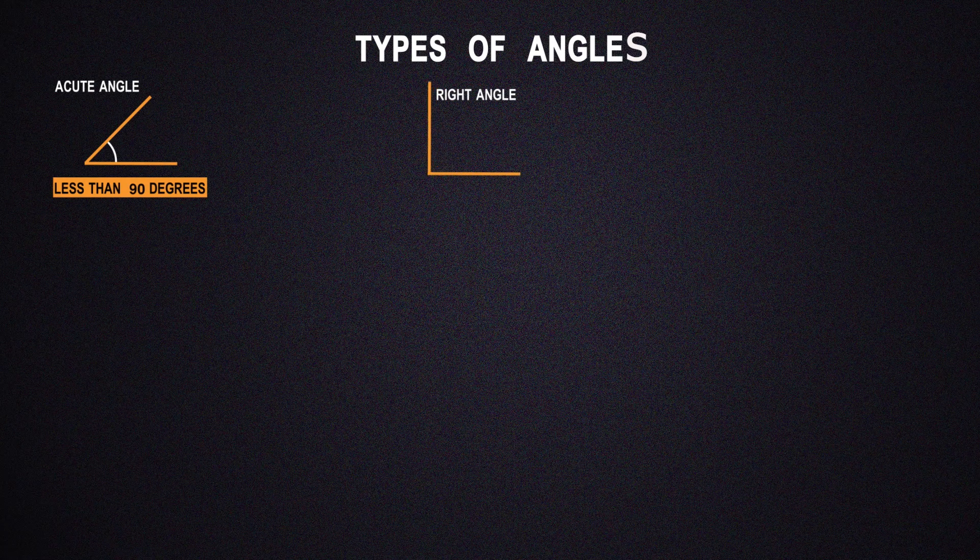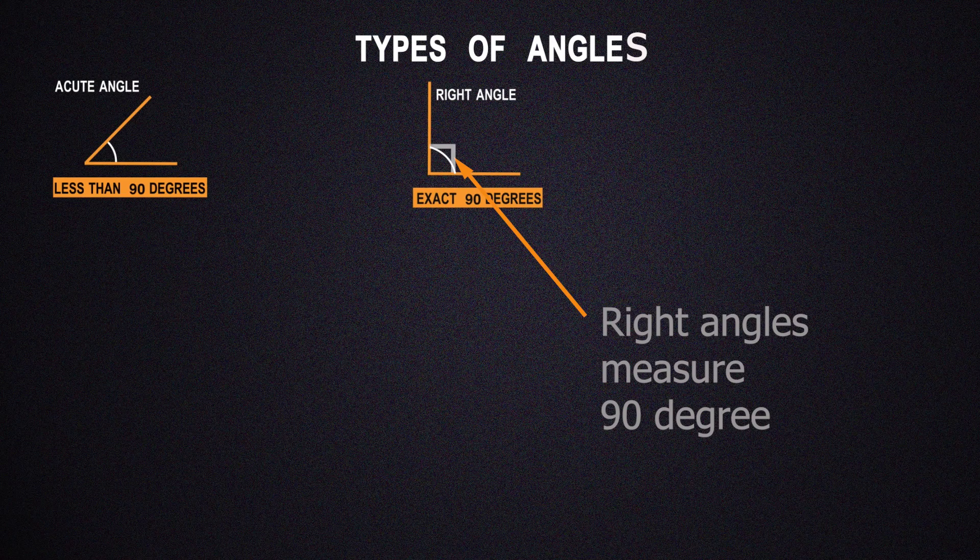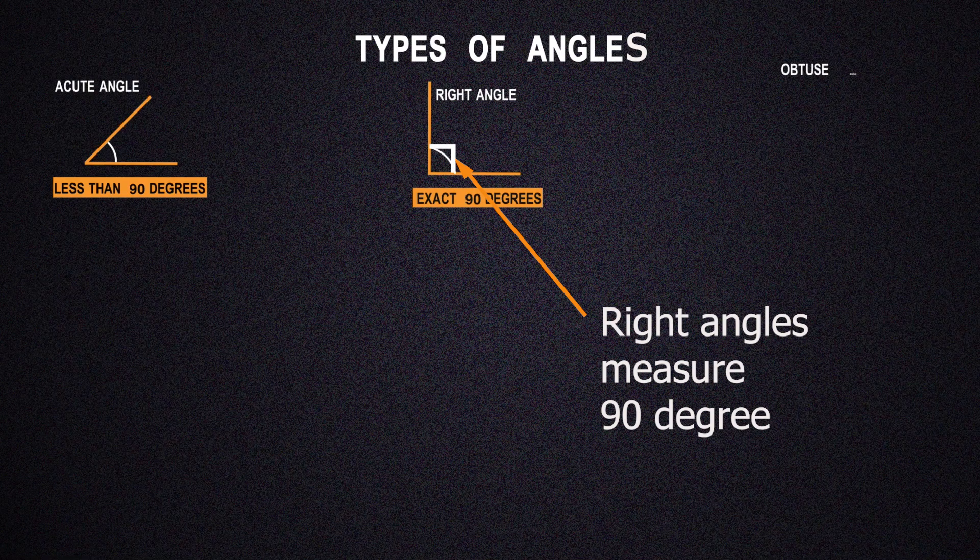Here we have a right angle. A right angle is an angle that is equal to exact 90 degrees.